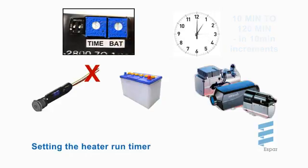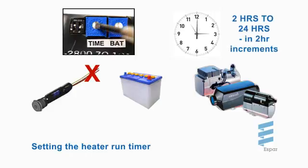The heater run time preset will be read in hours when the dip switch number one is in the up position. The minimum setting is 2 hours and the maximum setting is 24 hours in 2 hour increments.